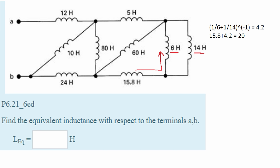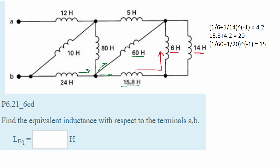Now we can see that this 20 Henry is in parallel with this next inductor, because if a current runs through here some of it's going to go this way and some of it's going to go this way. We're going to plug this into the parallel formula and we get 15. This inductor is now 15 Henry of inductance.